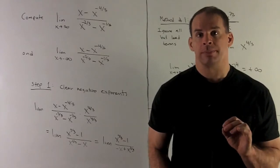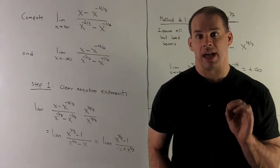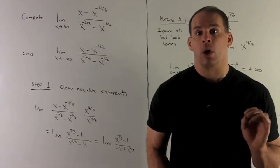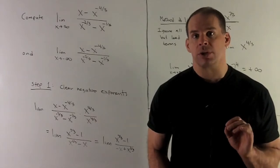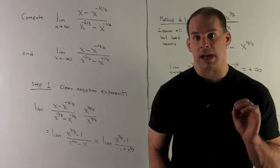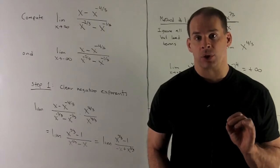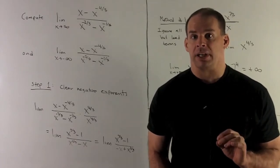Find the limit of the function x minus x to the minus 4 thirds over x to the minus 2 thirds minus x to the minus 1 third, as x goes to plus infinity and minus infinity.